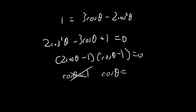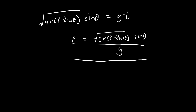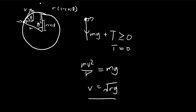The other solution is cosine theta equals one half, which means theta equals pi over 3, or 60 degrees. So the answer is 60 degrees. When the particle is at the point where this angle is 60 degrees and the rope is cut, it will fly off and reach its maximum height exactly above the center of the circle.